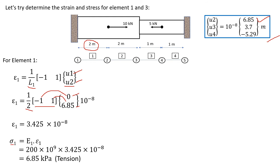From strain, we can solve stress using Hooke's Law: stress equals modulus of elasticity times strain. For element 1, we use E1 — element 1 is made from steel, so we use the modulus of elasticity for steel: 200 gigapascal. Multiplying with strain 1, we obtain stress equal to 6.85 kilopascal. Element 1 has been pulled out, so it is in tension — our answer is logical.